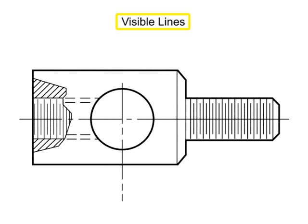Visible lines, sometimes called object lines, represent the edges or lines on an object. They are solid lines with a thick weight.